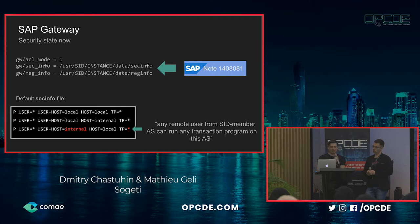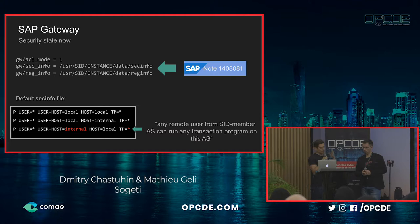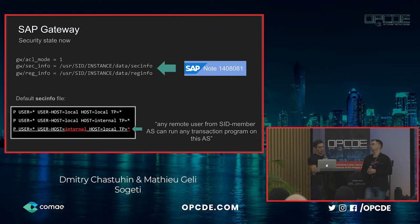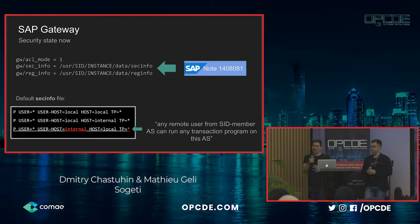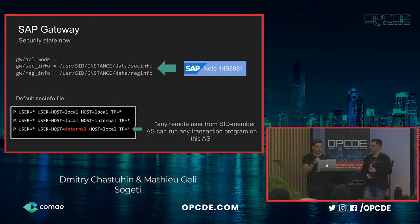SAP addressed this misconfiguration by shipping SAP gateway with a proper ACL list that says OS-level commands can only be executed if the packet comes from localhost (127.0.0.1) or from an application server belonging to the same SID. Within one SAP environment there can be several application servers, and the gateway will execute commands only from those trusted ones. Right after this fix, we thought about how to bypass it — specifically, could we disable the ACLs somehow?